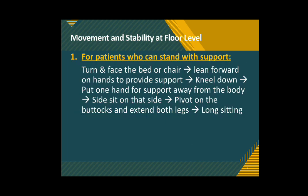Movement and stability at floor level depends on the patient's level of independence. For patients who are able to stand with support, coming down to sitting is easier. The person can turn and face the bed or chair, lean forward on hands, provide support through weight-bearing hands, and gradually get into the kneeling position. One hand is used for support away from the body. From kneeling, the person can come to side sitting, then pivot the buttocks and extend both legs to come into long sitting.